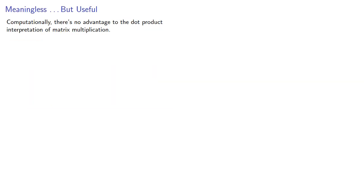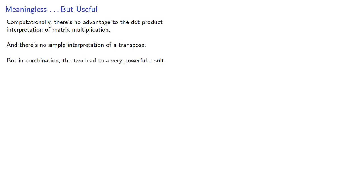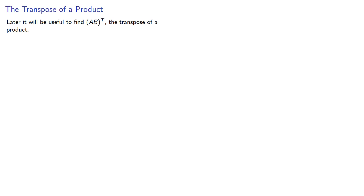Computationally there's no advantage to the dot product interpretation of matrix multiplication, and again there's no simple interpretation of a transpose. But in combination, the two lead to a very powerful result. Later on it will be useful to find (AB)-transpose — the transpose of a product. We'd like it to be somehow related to the transpose of A and the transpose of B. The obvious question is: might it be A-transpose B-transpose?